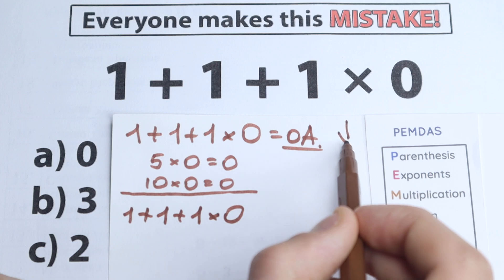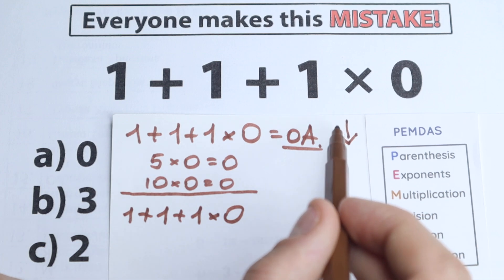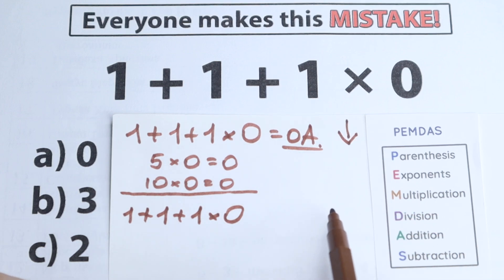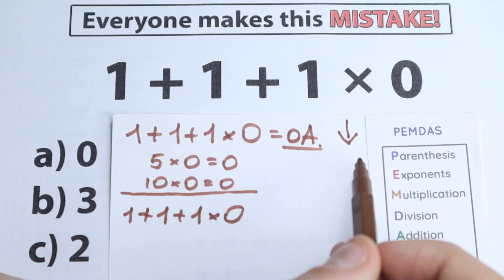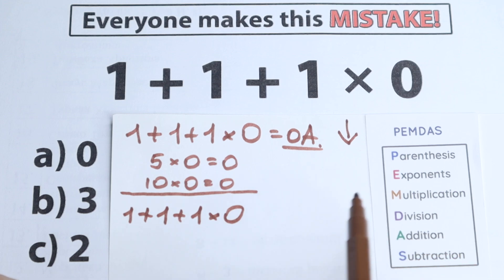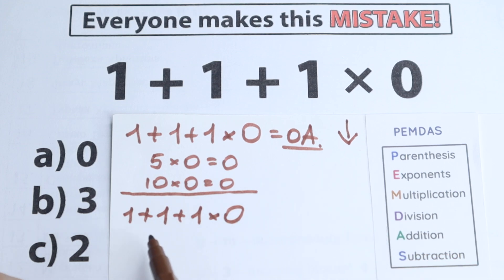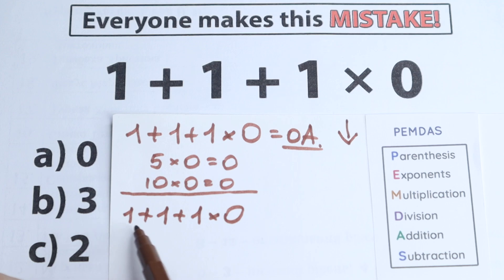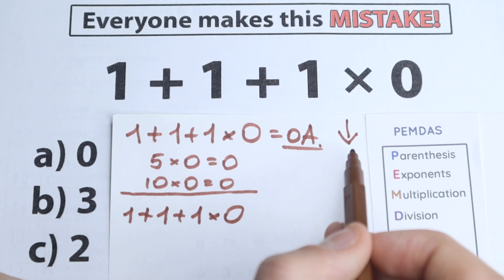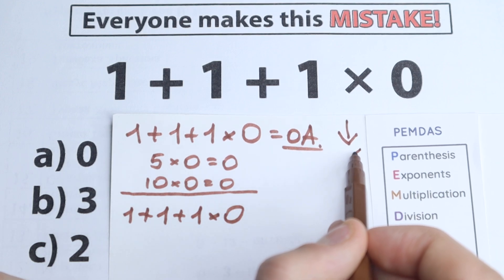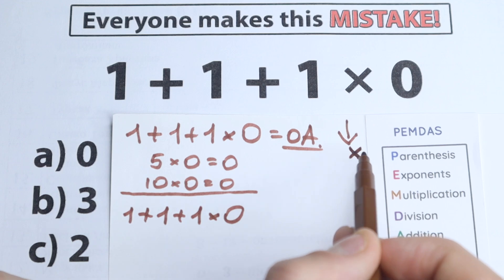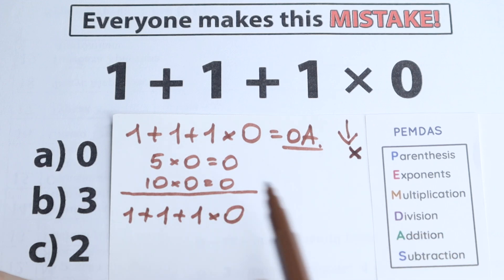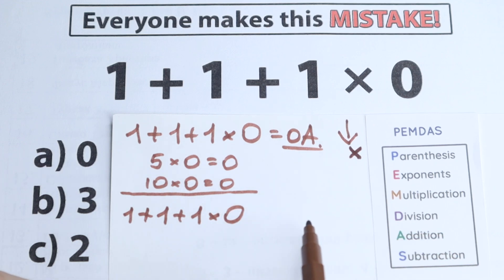PEMDAS works from top to bottom. The first step is Parentheses. We need to find any parentheses in the expression. I don't see any parentheses, so we just skip this part — which is really great, because parentheses can be a complicated step with a lot of difficulties.